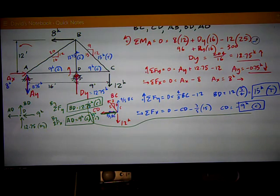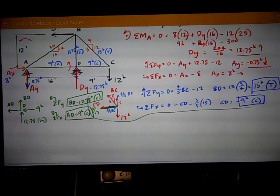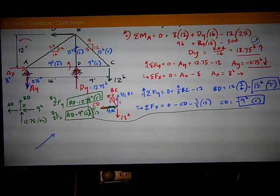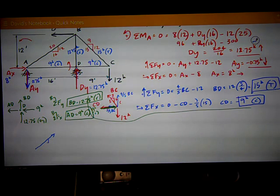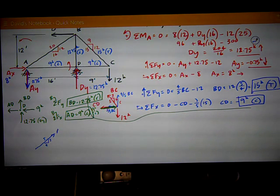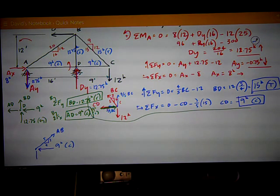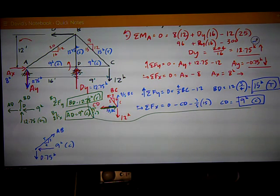So, the only one I need to solve for now is joint A. The free body diagram of joint A looks like this. I've got, now at A, this is orientation, three, four, five. The force in member AB that I'm solving for. And then I've got the force from AD, which is nine kips compression. I've got the vertical reaction at AY, which is negative, or 0.75 kips down. And I've got AX, eight kips to the right.